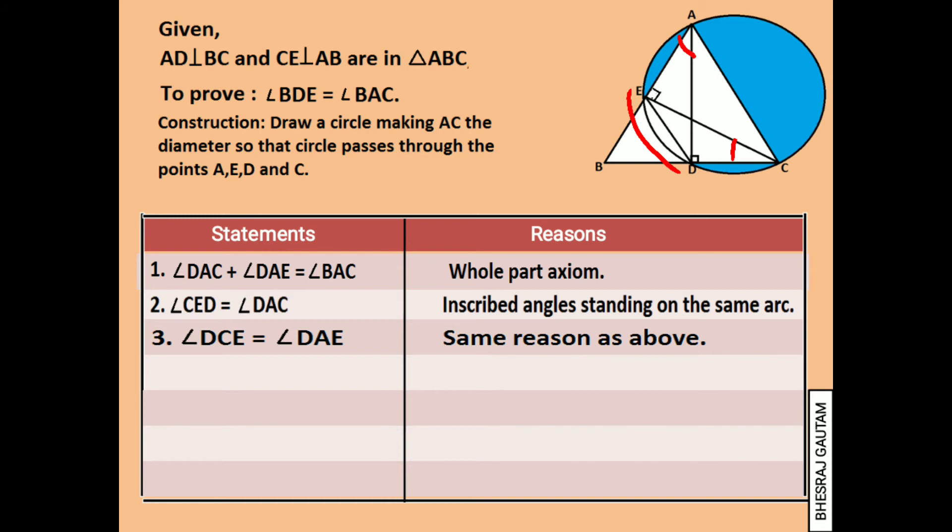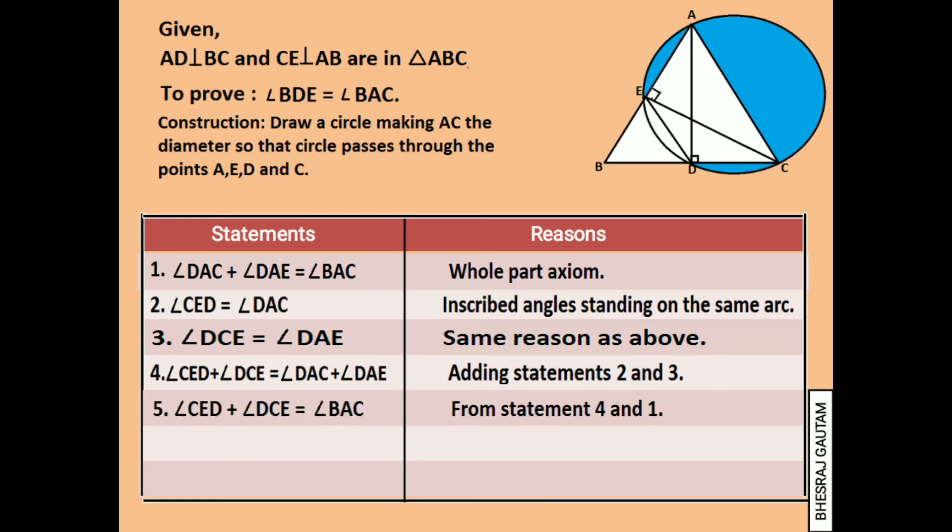If we add statements two and three, we can write angle CED plus angle DCE equals angle DAC plus angle DAE. Now, if we see the right-hand side of statement four, it is the same as statement one. So we replace angle DAC plus angle DAE by angle BAC and form statement five: angle CED plus angle DCE equals angle BAC.